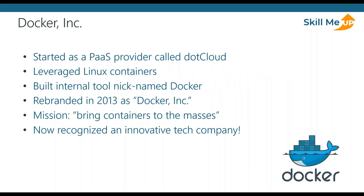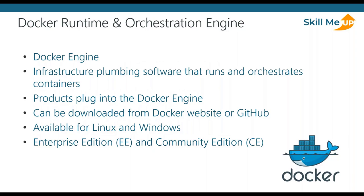A bit of history: Docker Inc. started its lifetime as a platform-as-a-service provider called .cloud. Behind the scenes, the .cloud platform leveraged Linux containers, and they built an internal tool they eventually nicknamed Docker. In 2013, .cloud was struggling, so they pivoted and rebranded the company as Docker Inc., starting the journey to bring containers out to the world.